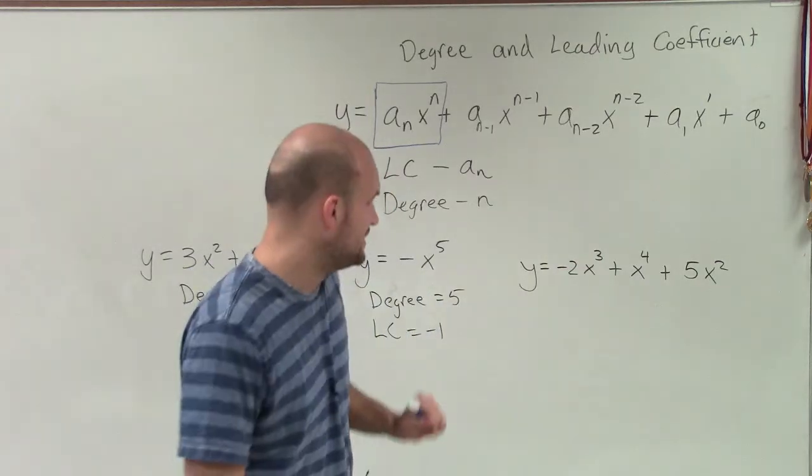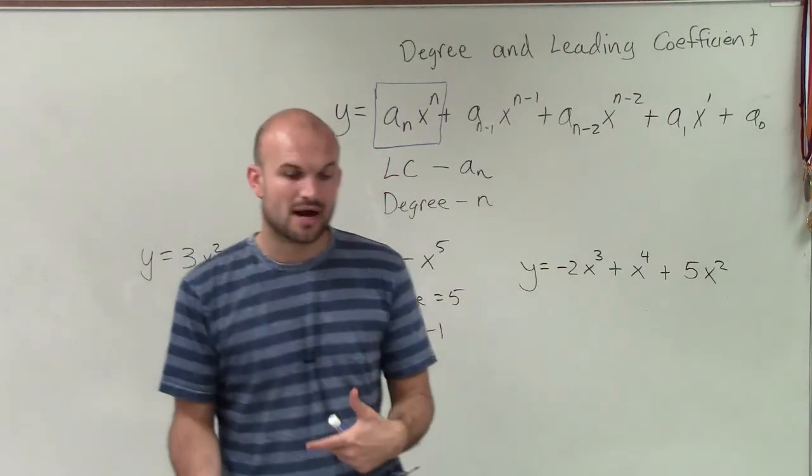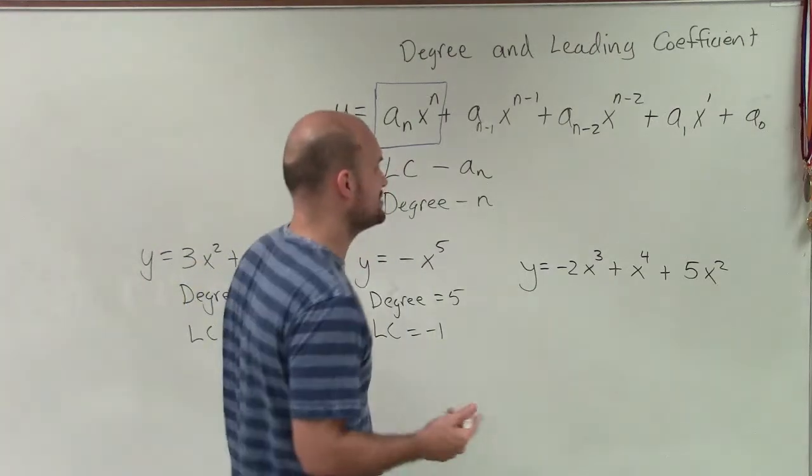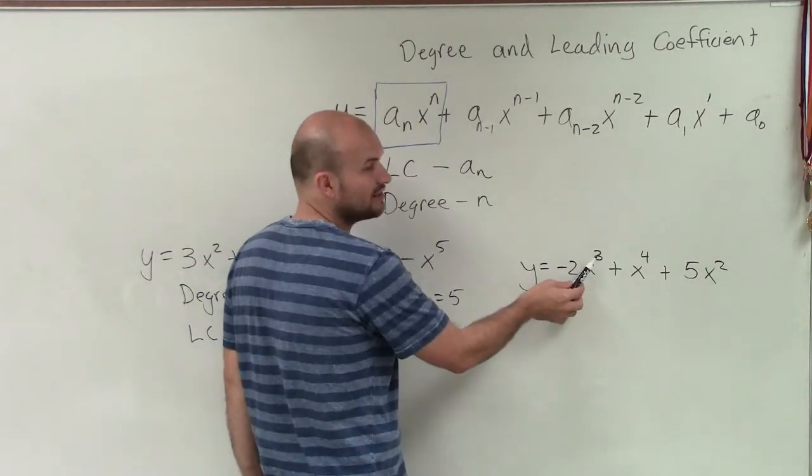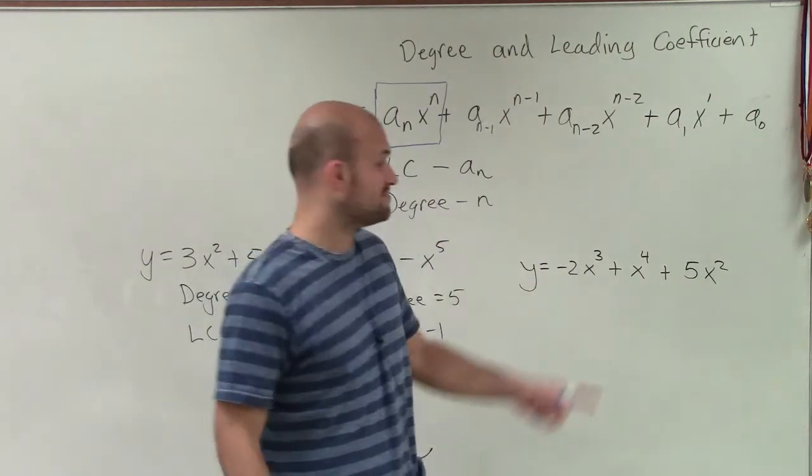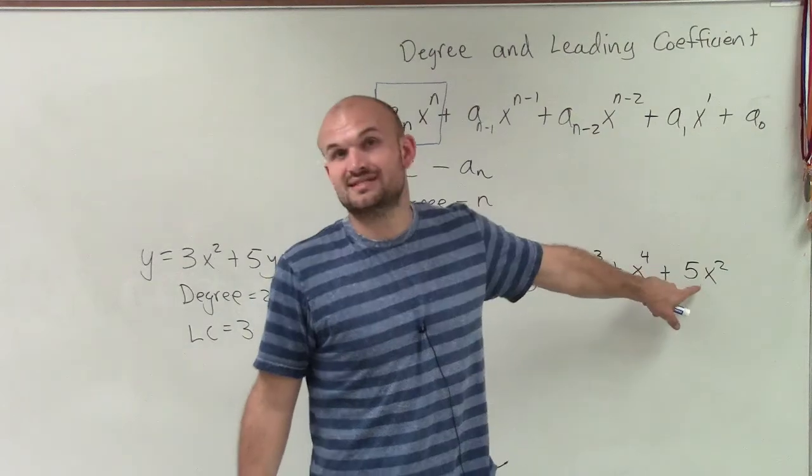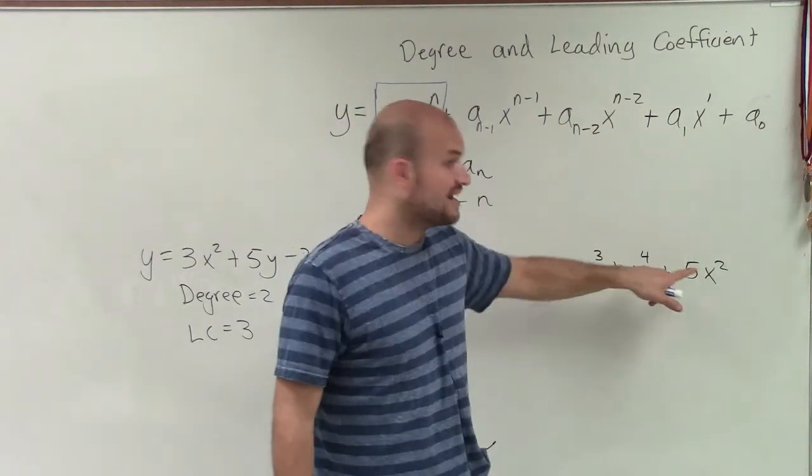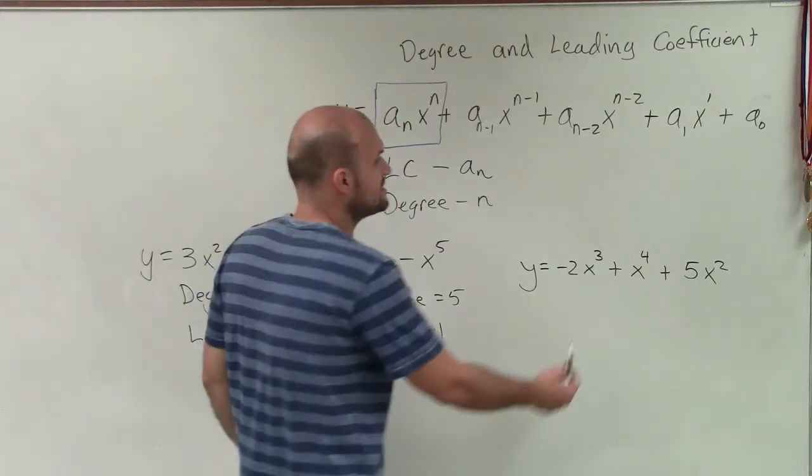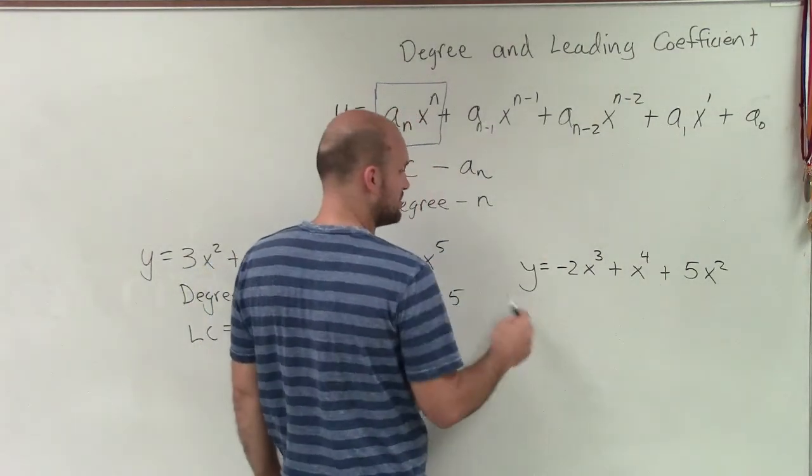All right, now on this one, in this example, a lot of times you'll see problems in the book or on a test that they don't have it in descending order. So a lot of students will say, oh, well, my degree is 3. No, the degree of this polynomial is not 3 because that's not the largest exponent. Then some students make the mistake and say, oh, well, the degree is 5 because that's the largest number. True, that is the largest number for our coefficients. But when we're doing a problem that's in descending order, it always goes by the ranking of your exponents.